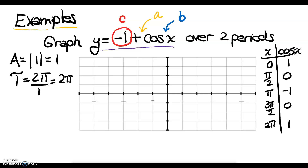I have a vertical shift down by 1, or negative 1. The first thing I do when I have a vertical shift is denote that vertical shift with a dashed line on my graph. This is my new x-axis, or a reminder that I'm moving my graph down. If you graph it on the x-axis and then move it down, this is where it will fall.